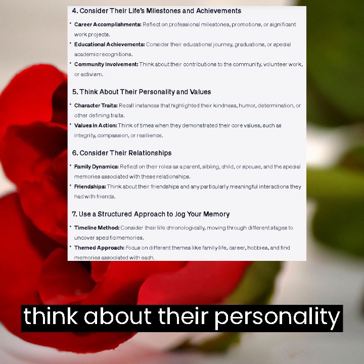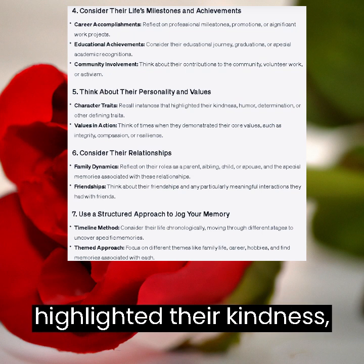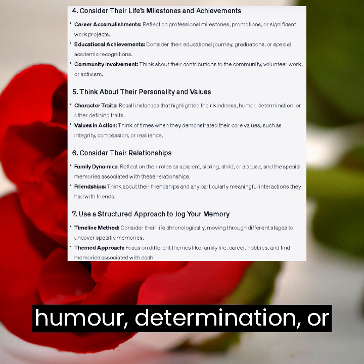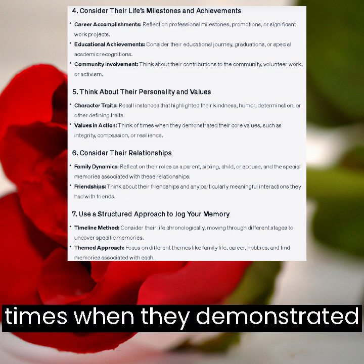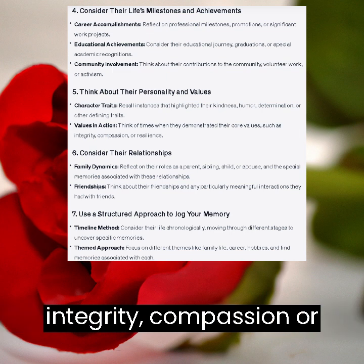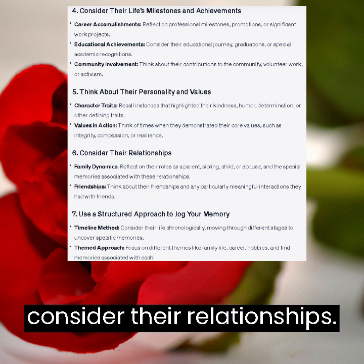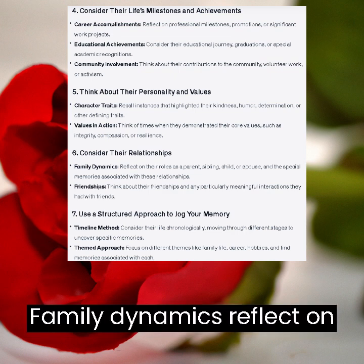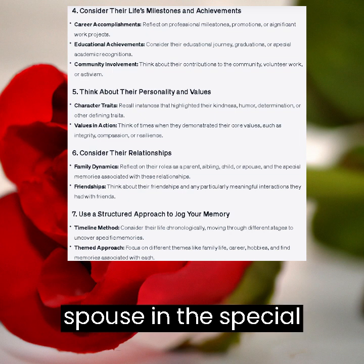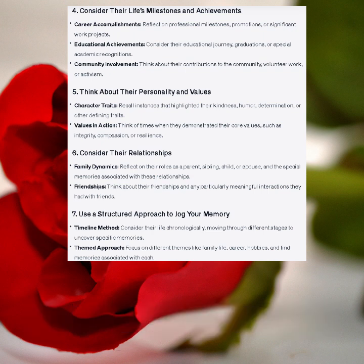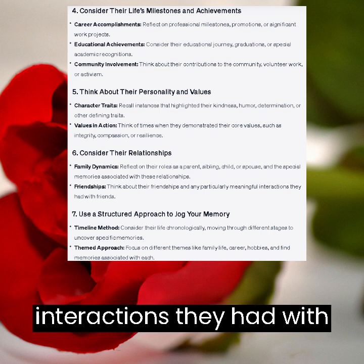Think about their personality and values. Character traits: recall instances that highlighted their kindness, humor, determination, or other defining traits. Values in action: think of times when they demonstrated their core values, such as integrity, compassion, or resilience. Consider their relationships. Family dynamics: reflect on their roles as a parent, sibling, child, or spouse, and the special memories associated with these relationships. Friendships: think about their friendships and any particularly meaningful interactions they had with friends.